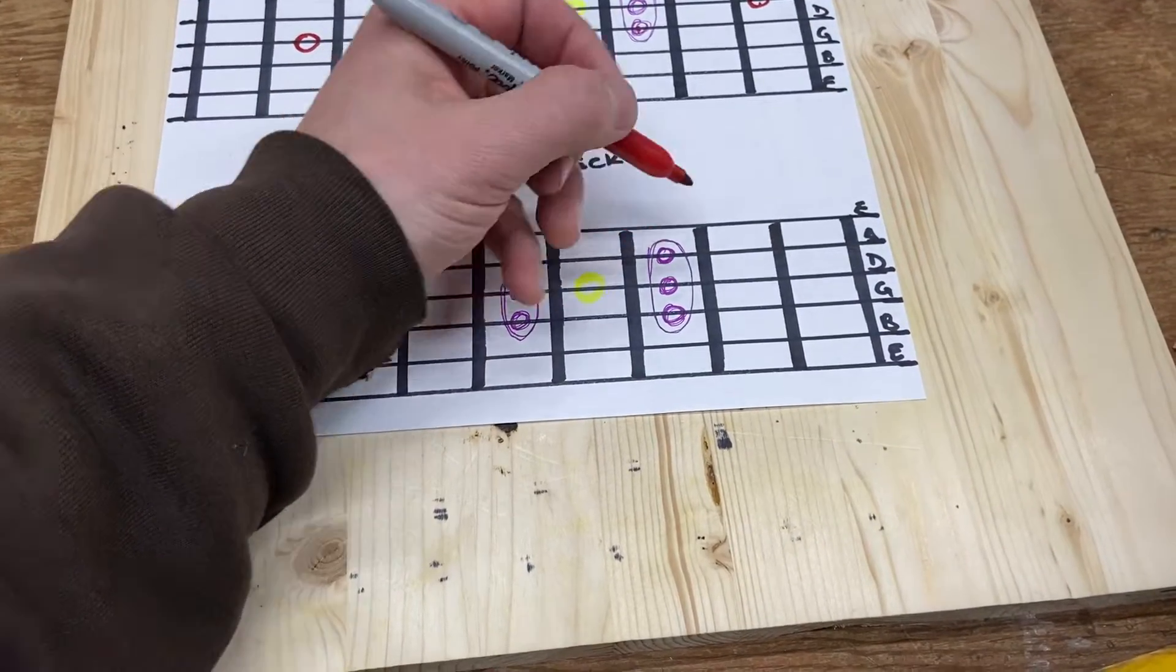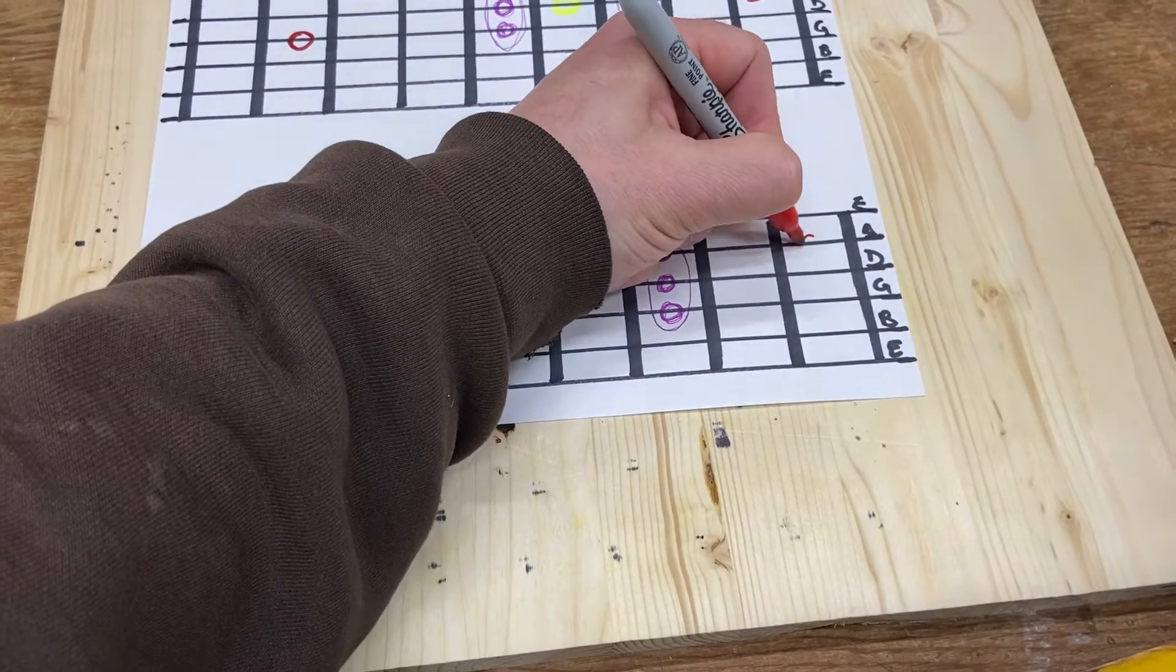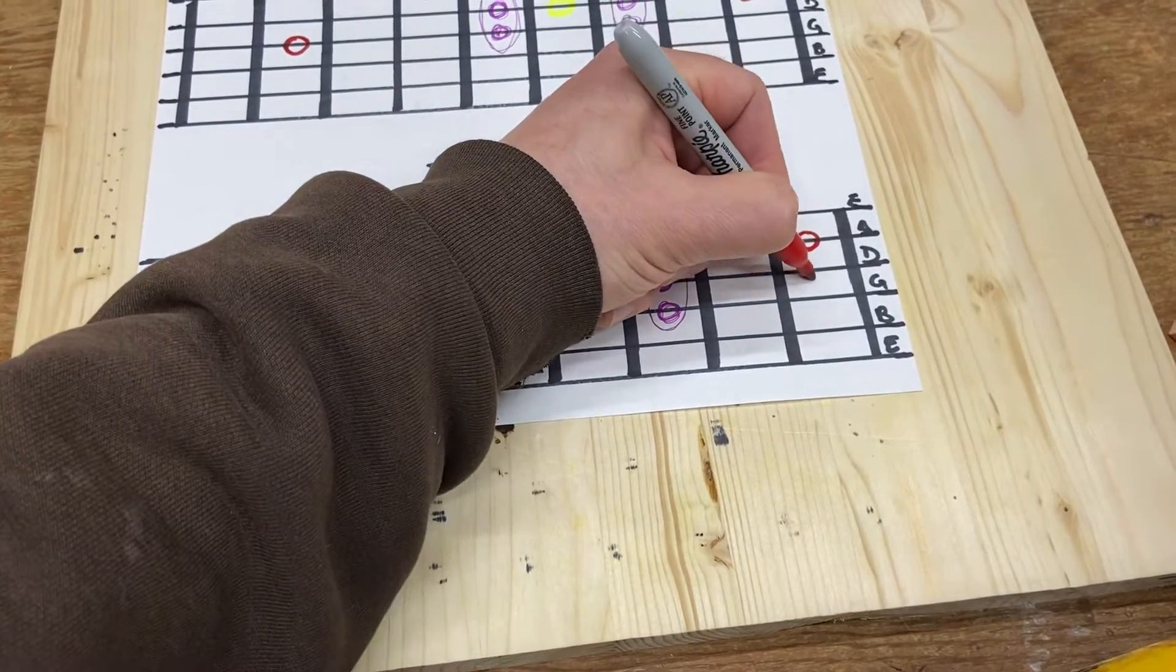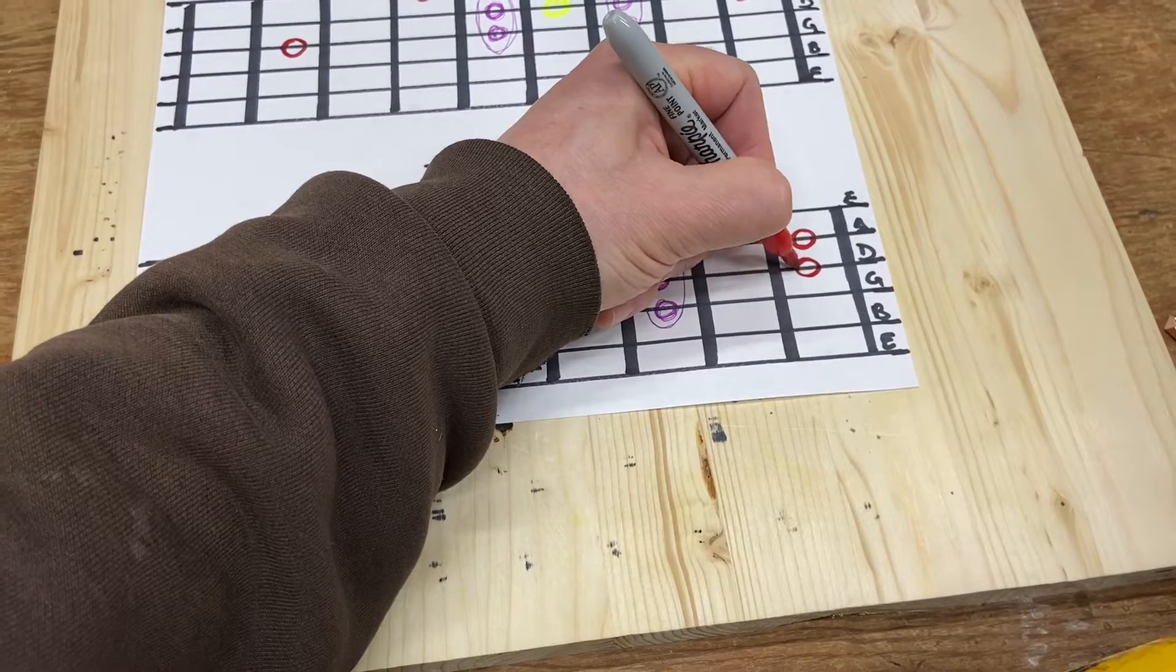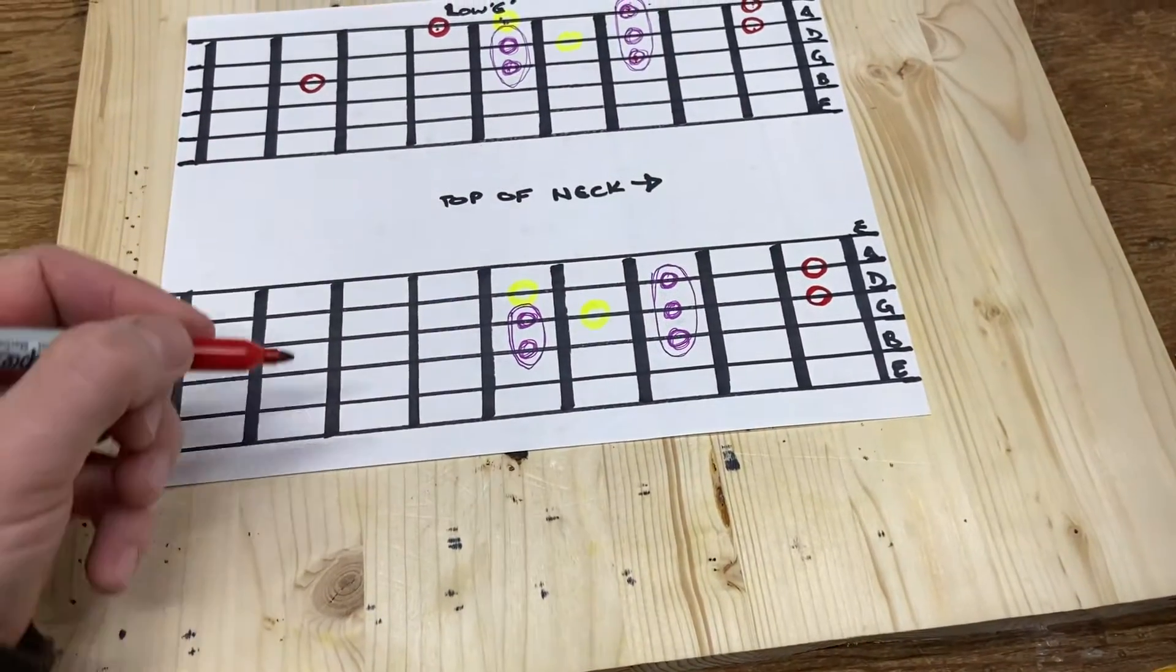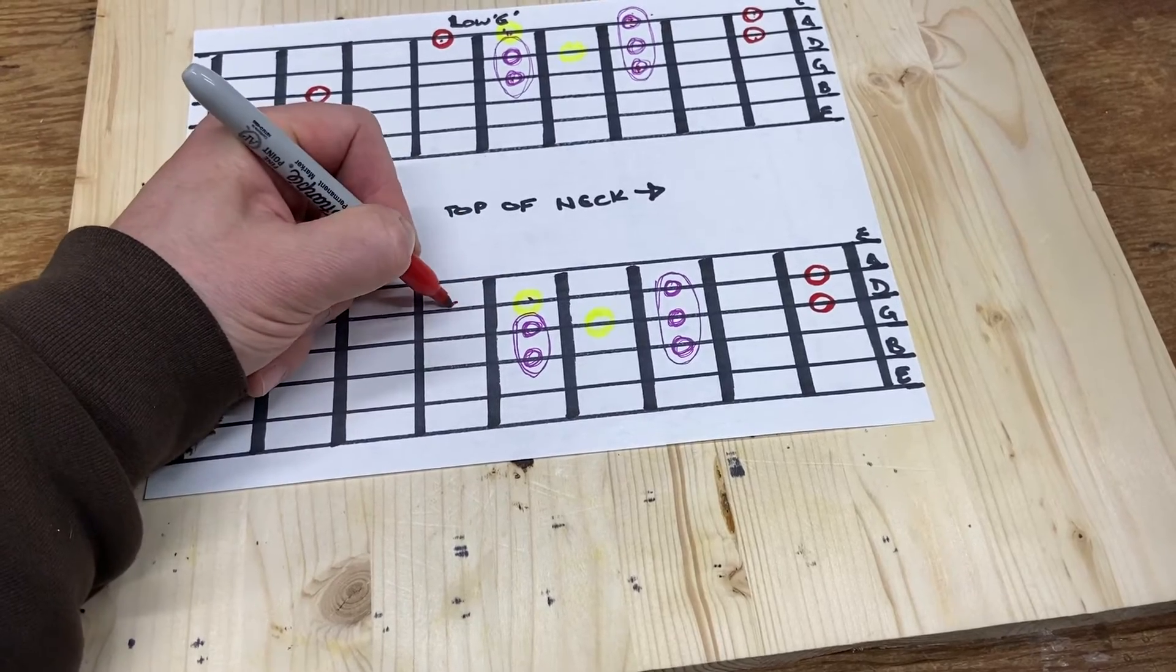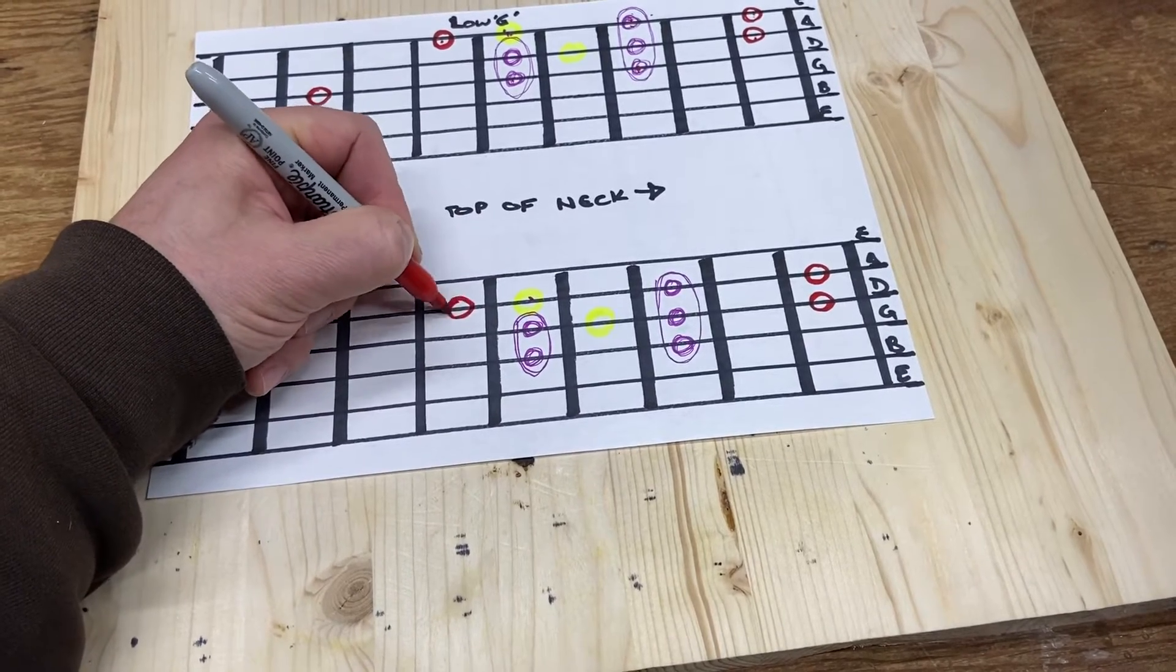Down here, we've got the same thing, except we've moved it down a string. So our new passing notes, our new buddies, will be two frets down this way. And his friend right below him. And then on this side, instead of this guy here, we're going to put him right there. That's his blues buddy.